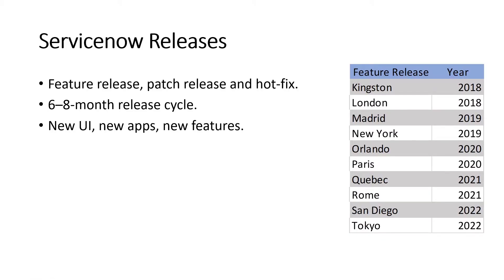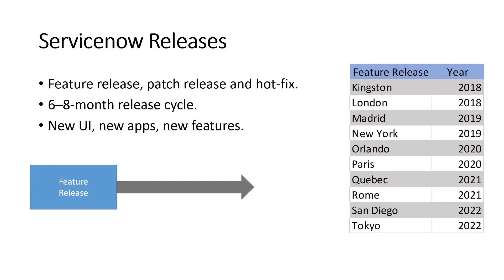On the right-hand side of my screen you can see a chart showing the feature releases and their years. The feature release names are city names: Kingston and London both released in 2018, then Madrid and New York for 2019, Paris for 2020, Quebec and Rome for 2021, and in 2022 we have San Diego and Tokyo. It's the same concept as Android version updates — every software requires updates to fix issues and add new features.